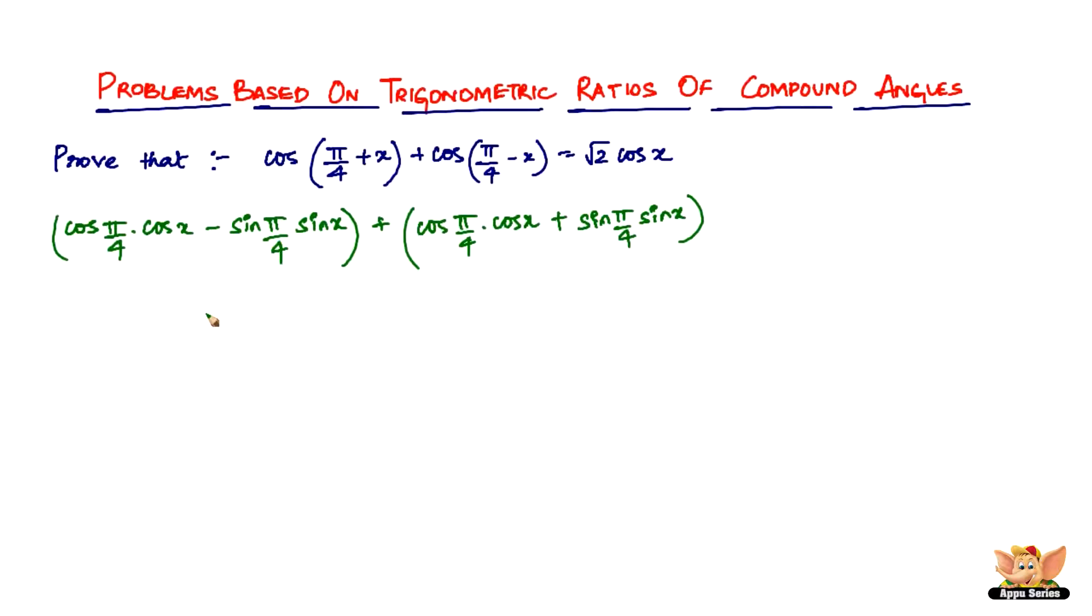So now what we do is remove the brackets. Cos pi by 4 cos x and then group them. Plus group the cos pi by 4. Notice the right hand side, right hand side has got a cos. So it's most likely, I mean you can see that sin and sin are going to cancel. Only cos is going to remain. So let's see what happens.